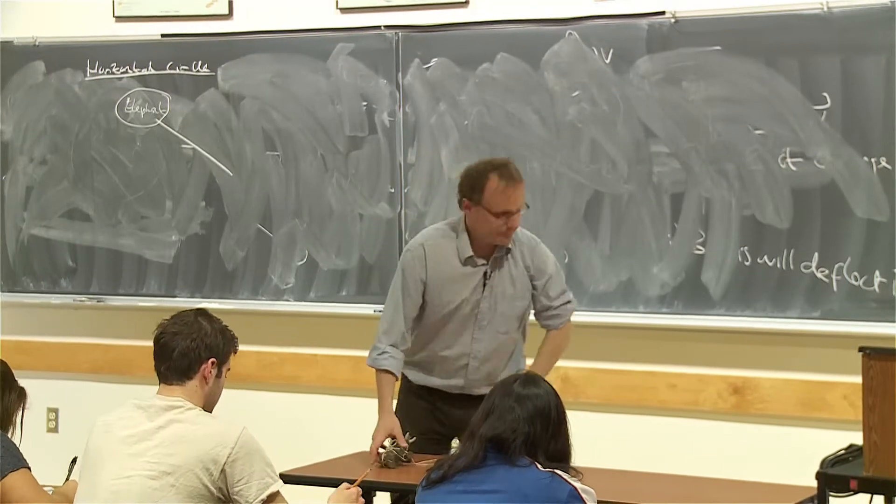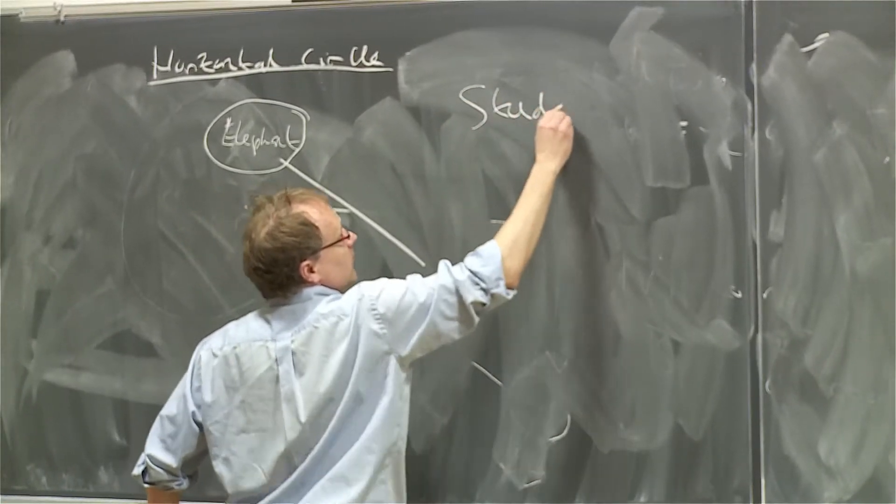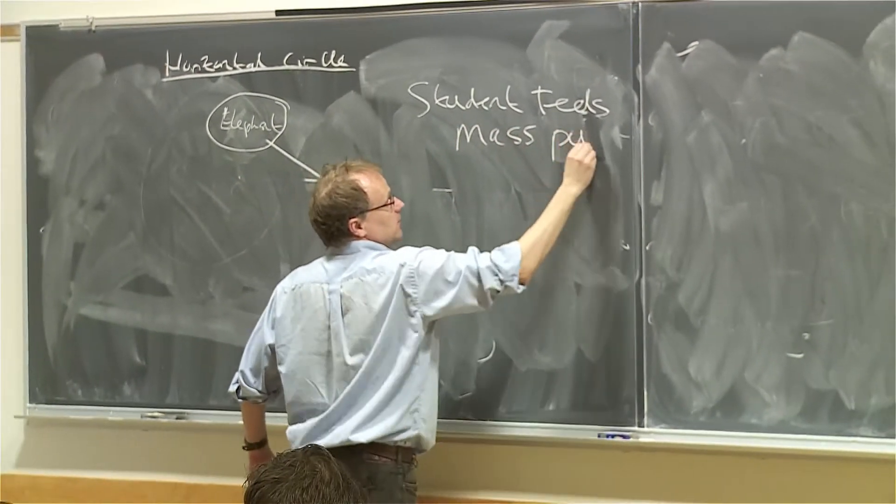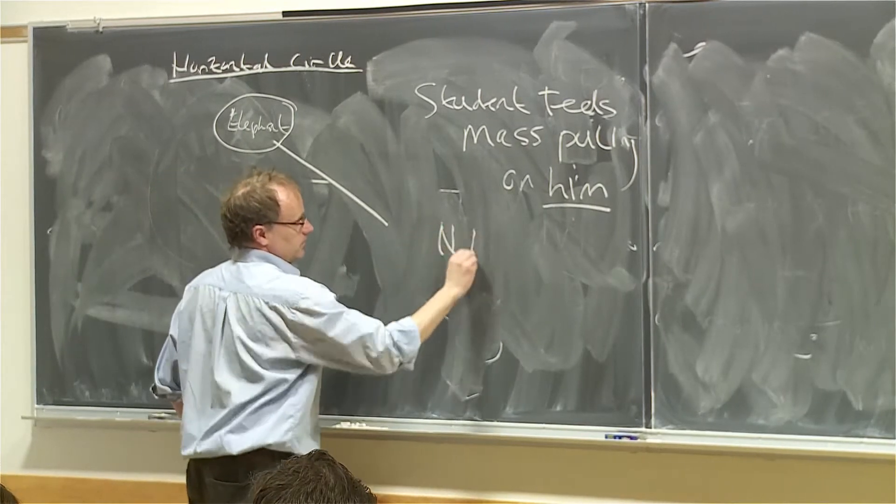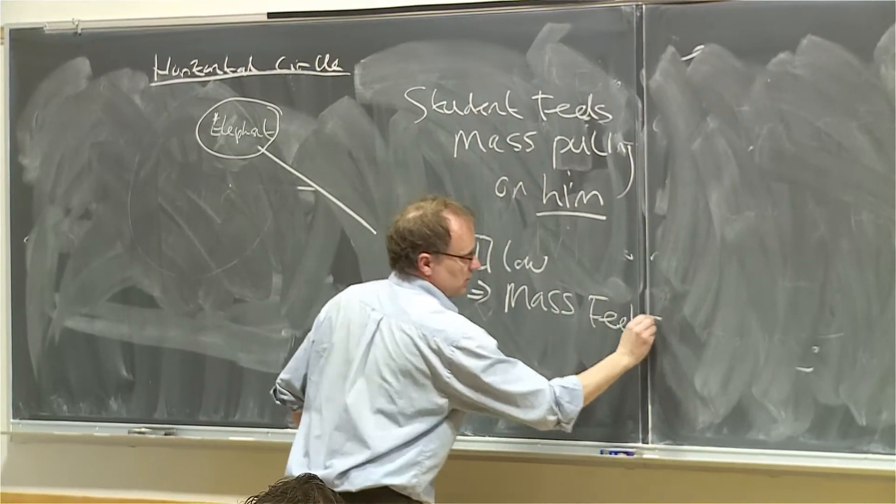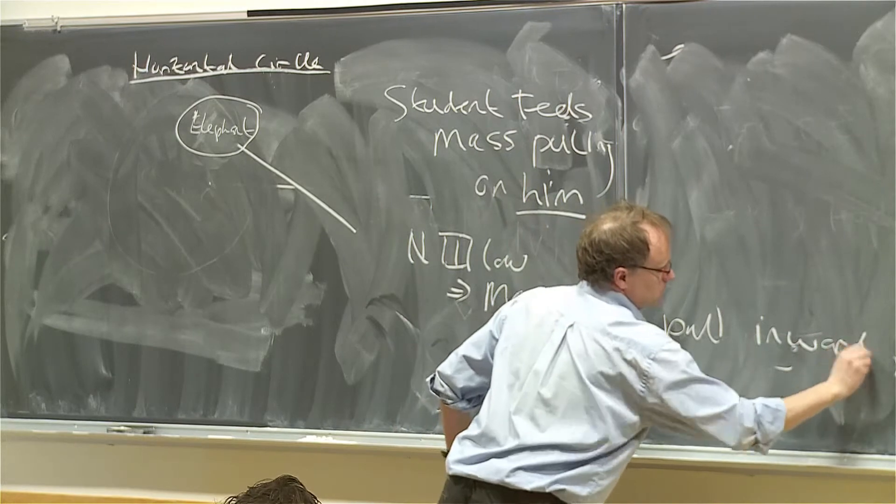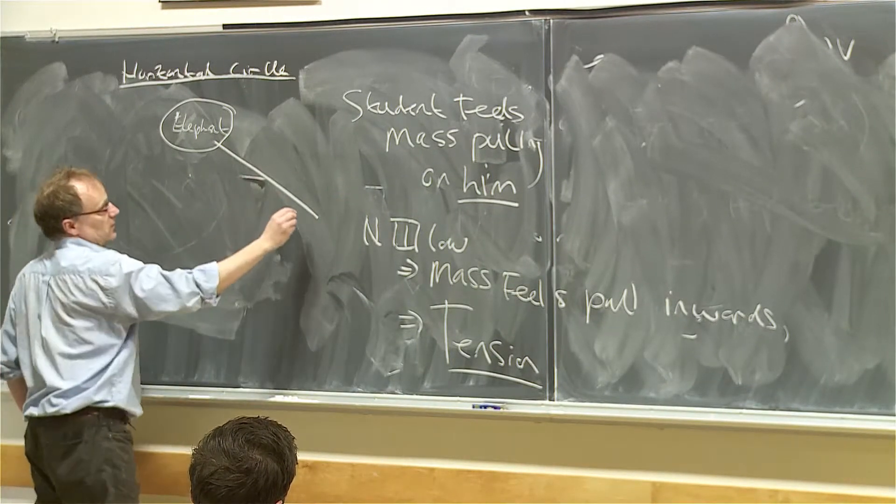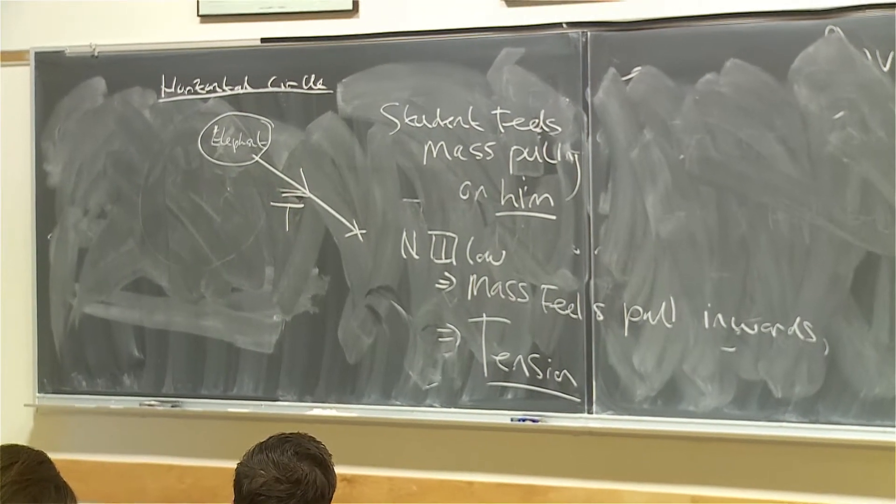What's making it go in a circle is me pulling on it. That's Newton's third law. So the elephant feels the ball or the elephant, if you like, mass pulling on him. But Newton's third law says that the mass feels pull inwards. And this is what we call the tension.